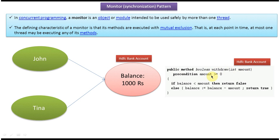First, the condition will check if the amount is greater than zero. Yes, 500 is greater than zero. Then it will check if the balance is less than the amount. The balance is 1000 and the amount they are passing is 500, so the balance is not less than 500 — 1000 is not less than 500. So it will come to the else block, subtract 500 from 1000, and return true. So 500 rupees they can withdraw.